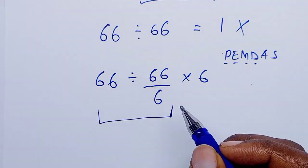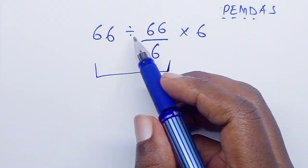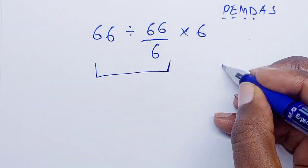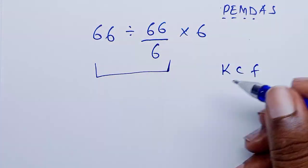So we shall work out this first: 66 divided by 66 over 6. Now here we're going to use what we call the KCF rule.